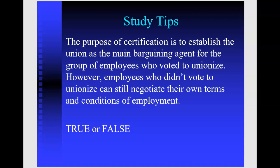Here is a true or false question similar to what you may see on the exam. The question states that the purpose of certification is to establish the union as the main bargaining agent for the group of employees who voted to unionize, and that employees who didn't vote can still negotiate their own terms and conditions of employment. The answer is false. When the union is formed, there can't be individual employment contracts — everything is between the union and the employer. The union is the exclusive bargaining agent for all employees in that bargaining unit.